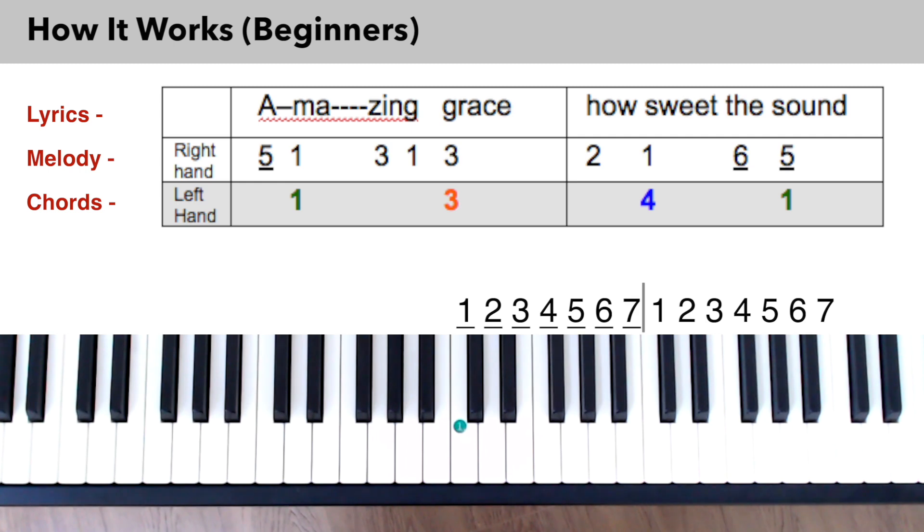Here's how it works for the beginners level. The melody is played in the right hand. The line below the lyrics shows which keys to play. Lines are placed below the numbers to show when they are to be played in the lower octave.